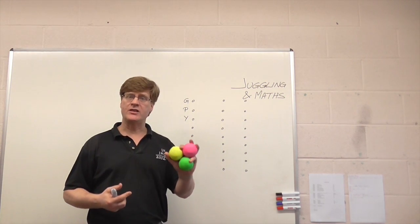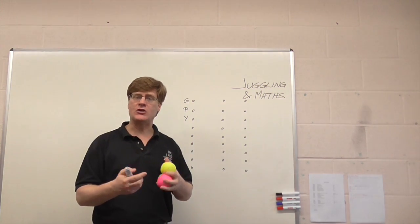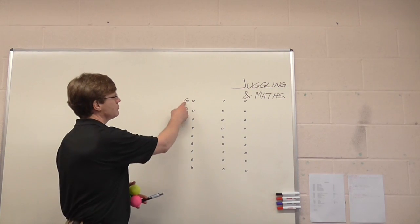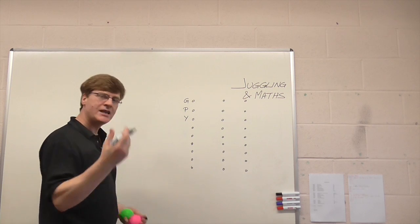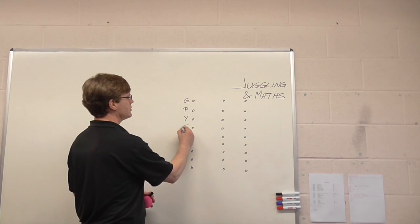We've already talked about juggling three, where the balls take it in turns. You can see here I've got green, pink, yellow, and of course if they're taking it in turns that means the next ball that will be thrown is the green.